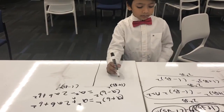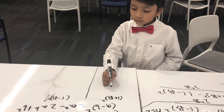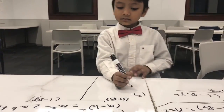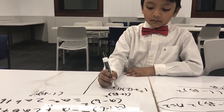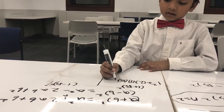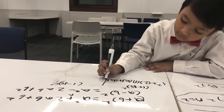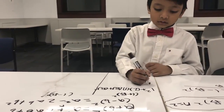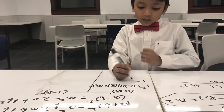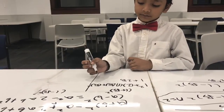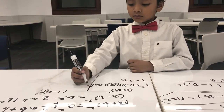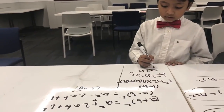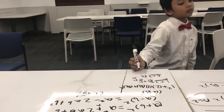So 1 plus square root of 5 squared equals 1 squared plus 2 times 1 times square root of 5 plus square root of 5 squared. So 1 squared is 1, plus 2 times 1 is 2 times square root of 5, plus square root of 5 squared is 5. So our answer is 6 plus 2 square root of 5.